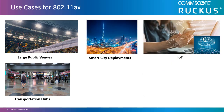IoT and smart city deployments face a wide variety of challenges. In some cases, there can be a high volume of devices all attempting to communicate simultaneously, such as at a manufacturing site. In others, a small number of devices could be idle and need to phone home once a day. Power efficiencies in 802.11ax can enable devices to go into deep sleep mode and turn on their transmitters at predefined intervals to prolong field time without maintenance.